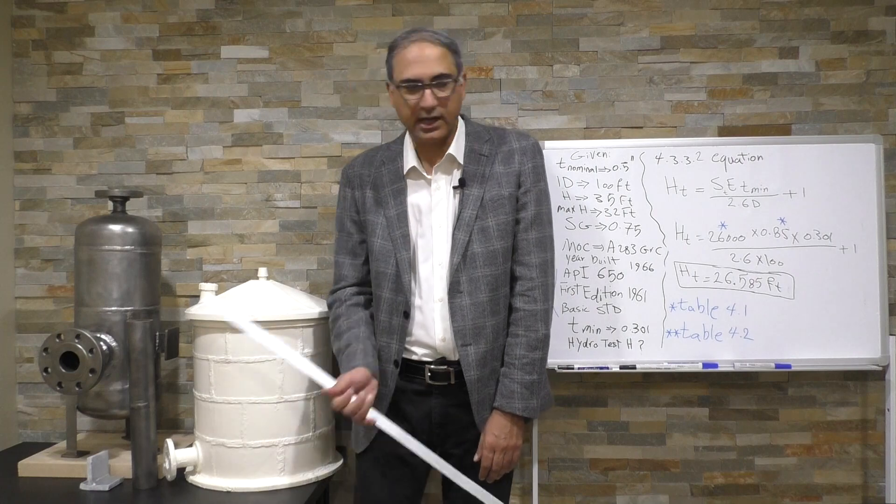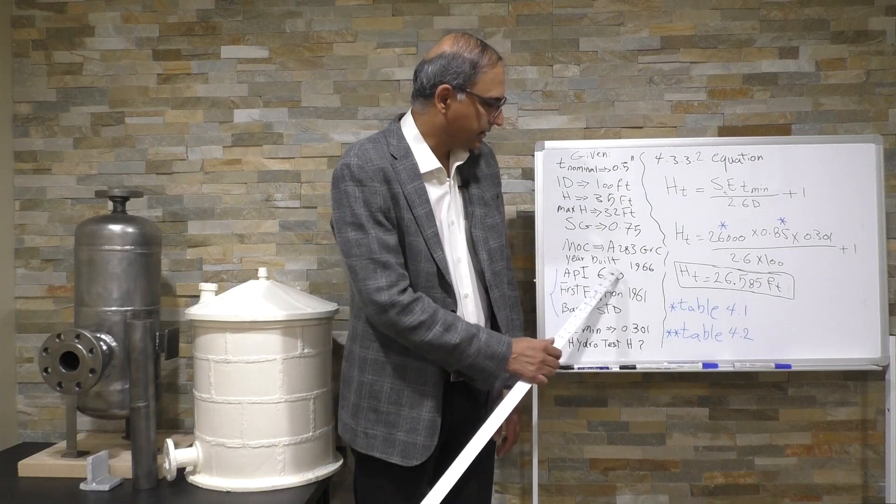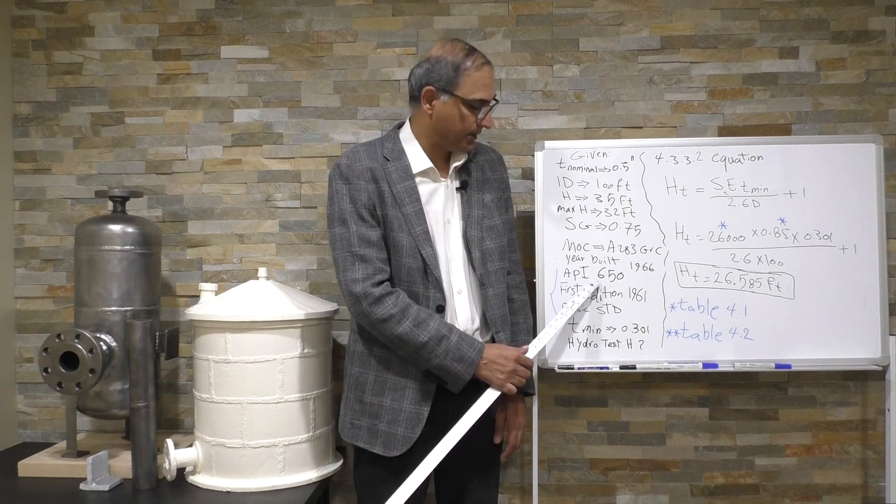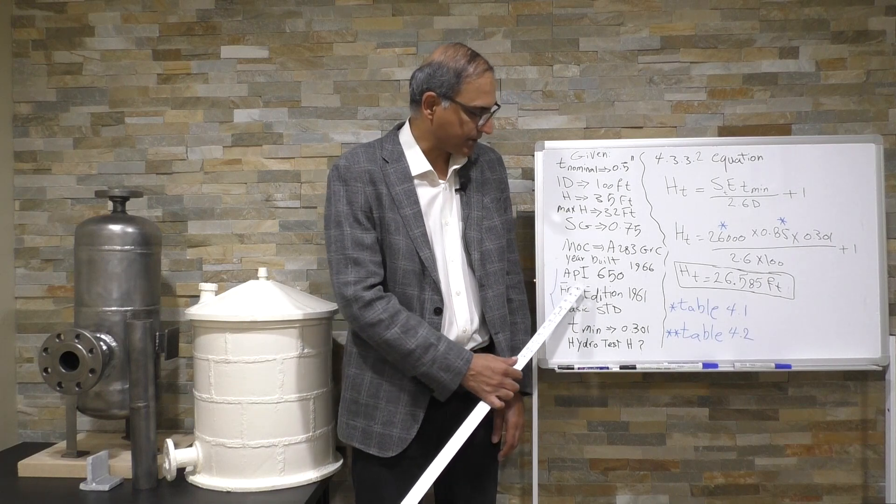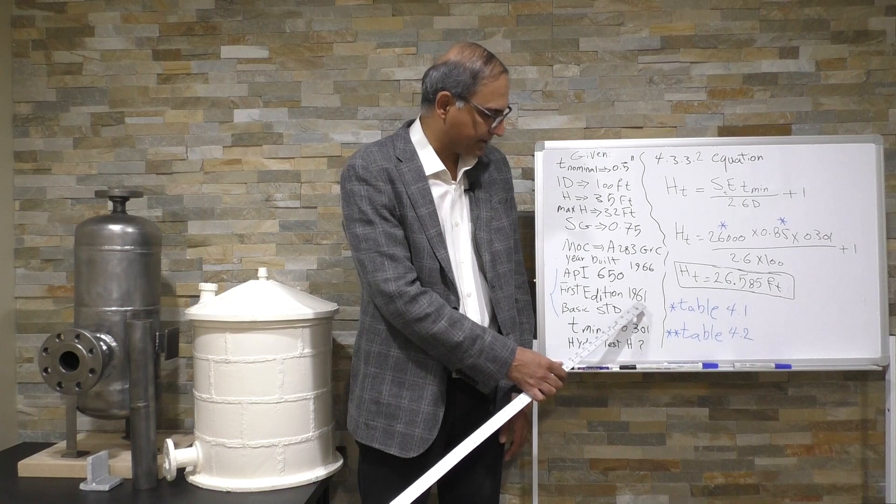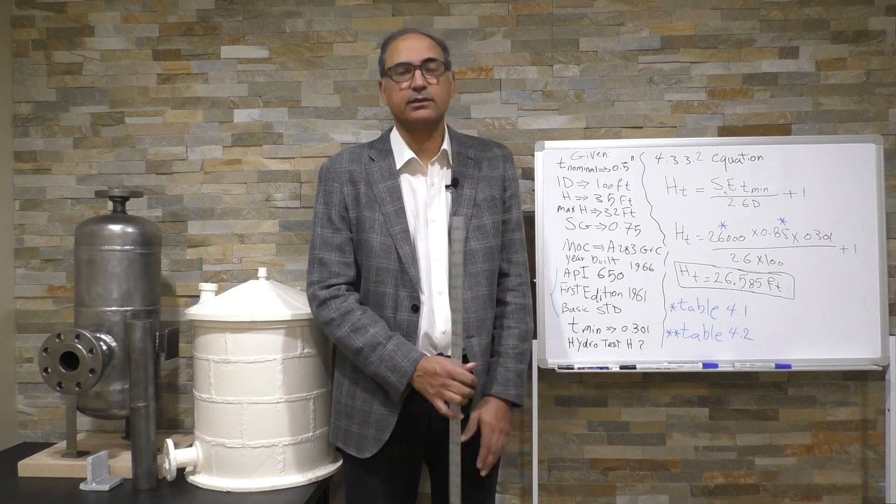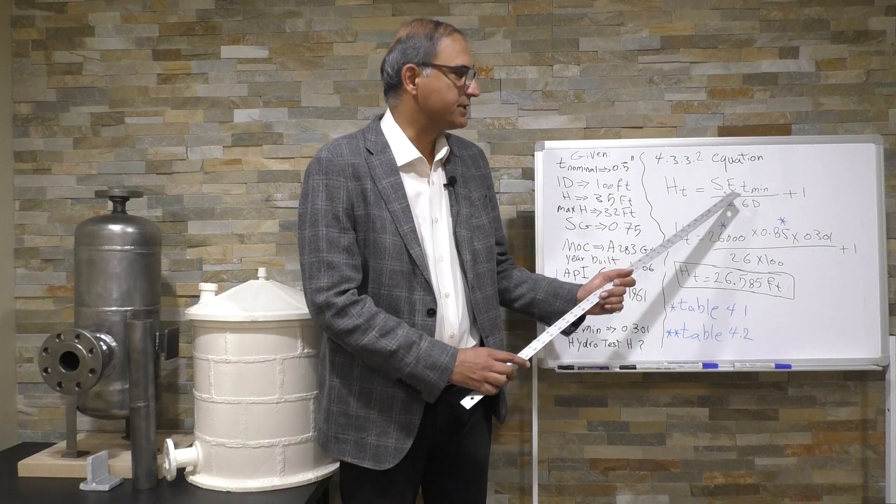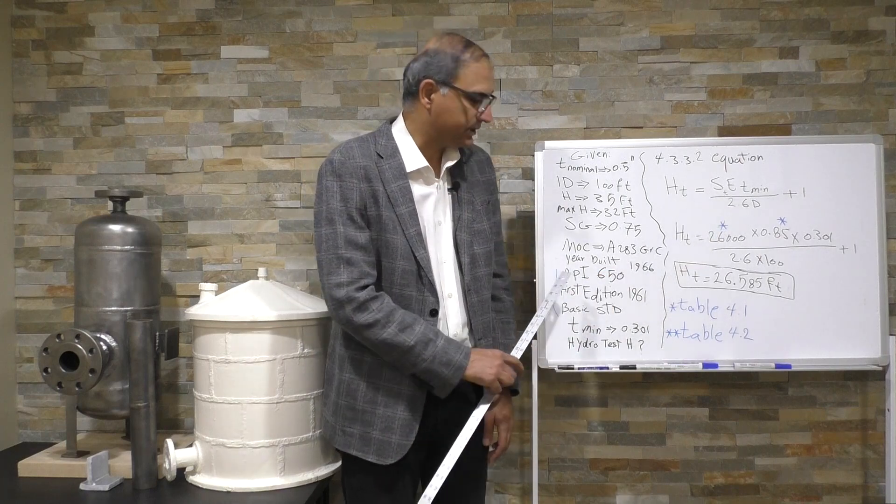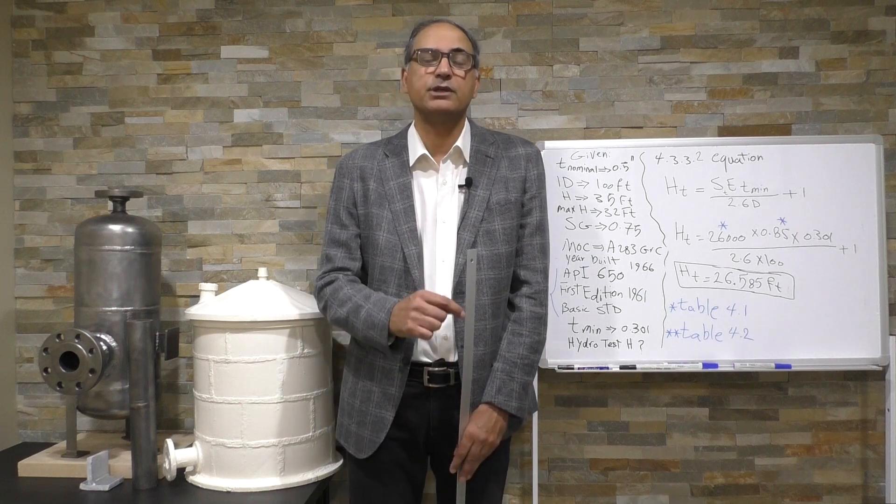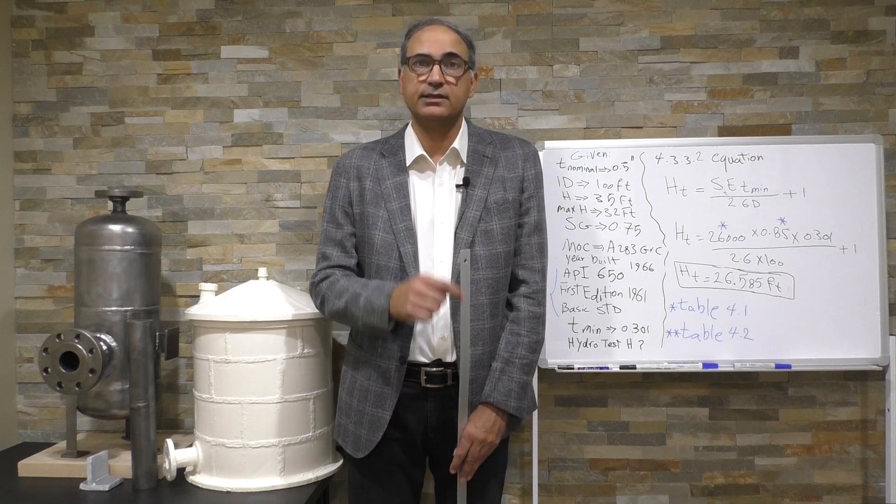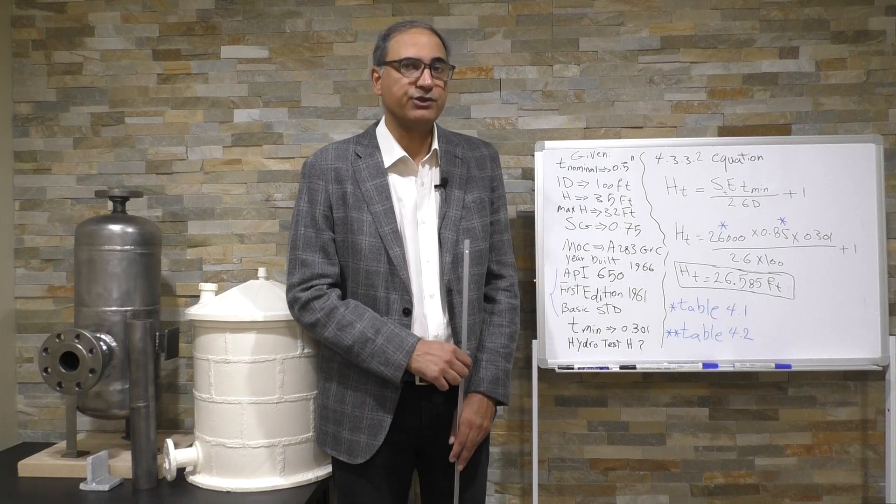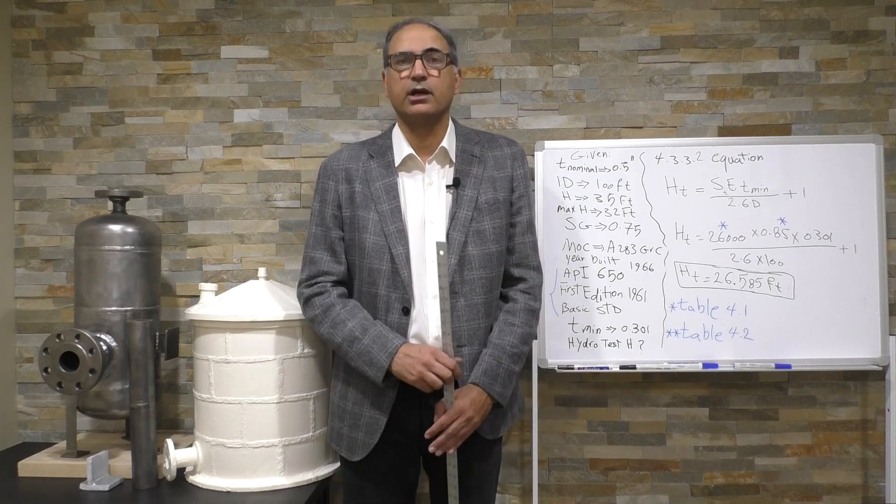This storage tank was built in 1966, and it's designed based on API 650, first edition of 1961, and it's a basic design. We need to know about the joint efficiency in here, we need to know what edition our storage tank was designed to, so we can determine what is the joint efficiency that later on we're going to use in the equation.